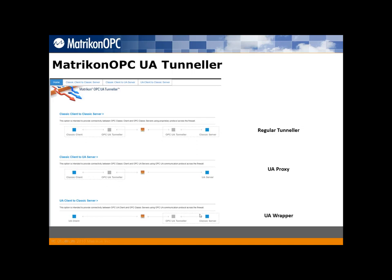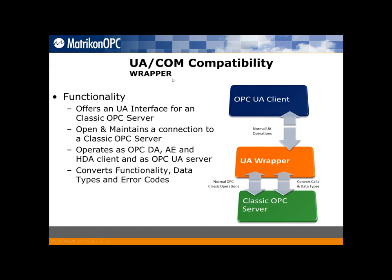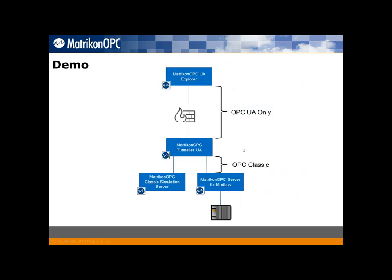The demo I'm going to show you is about the other functionality: the UA Wrapper. This converts an OPC classic server into an OPC UA server, so we can integrate those OPC classic servers we have in our company with OPC UA client applications. We just need to place a UA Tunneler together with the OPC classic servers. From the OPC UA client's point of view, it is connecting to one OPC UA server.